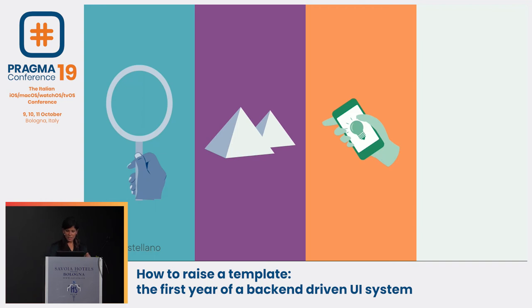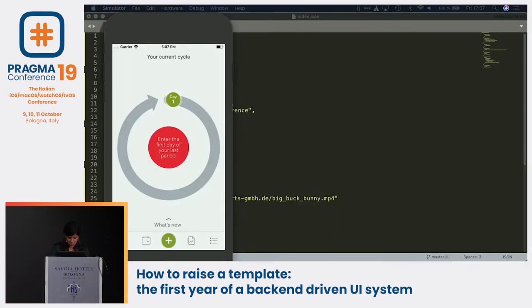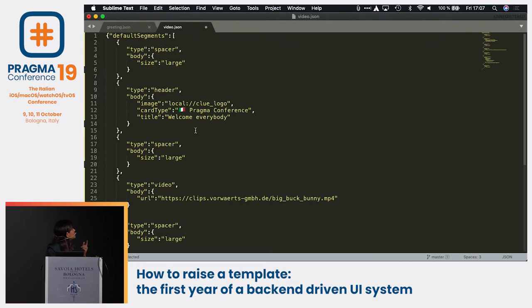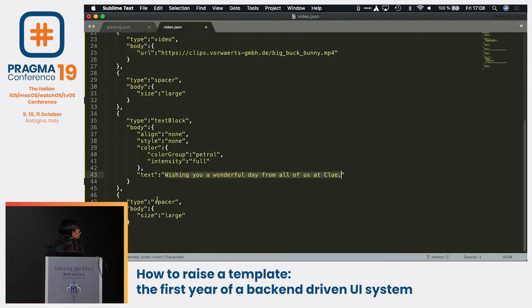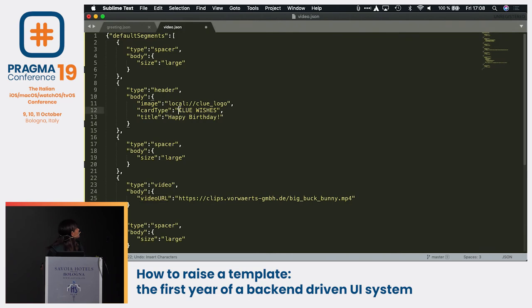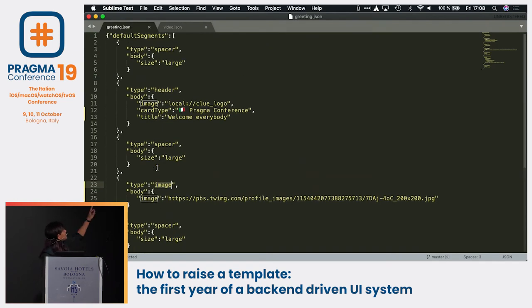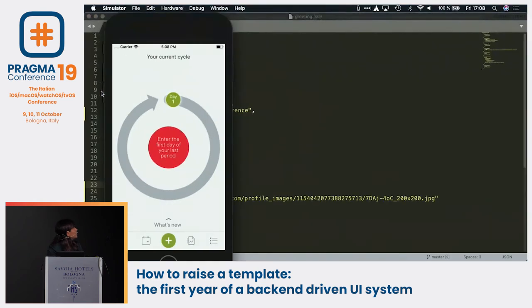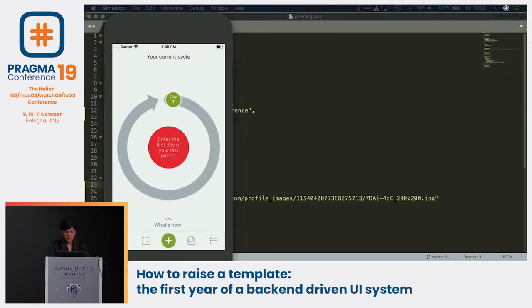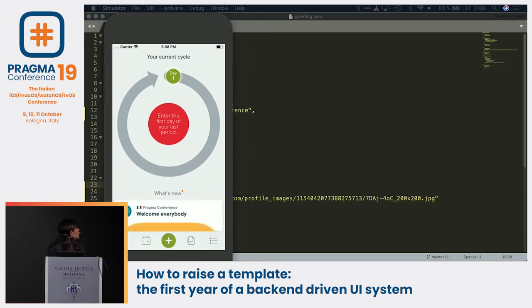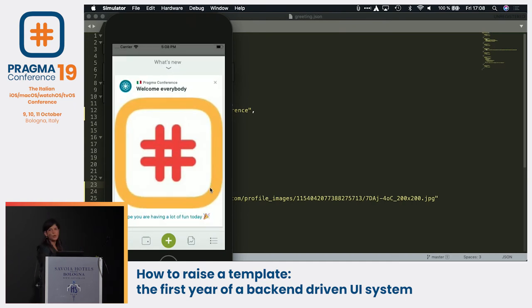Now it's demo time. This is our Clue app. Here I have a card that says 'Welcome everybody' with an image. I'm going to send a new card — and as we see here, it says 'Welcome everybody, I hope you're having a lot of fun today.' But what happens if we want to support video?